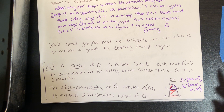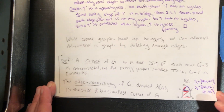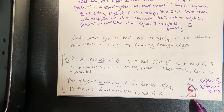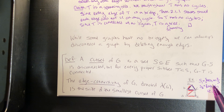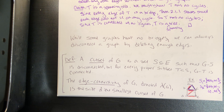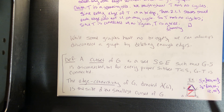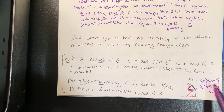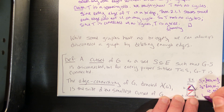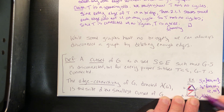Notice one cut set had two edges and another had four edges. The edge connectivity of a graph, denoted λ(G), is the size of the smallest cut set. Even though you can disconnect this graph by deleting four edges, you can also do it by deleting only two. No single edge is a bridge, so λ(G) is at least two. We've shown it's possible to disconnect the graph by deleting only two edges, and deleting one edge is not enough. Therefore, the edge connectivity of this graph is λ(G) = 2.